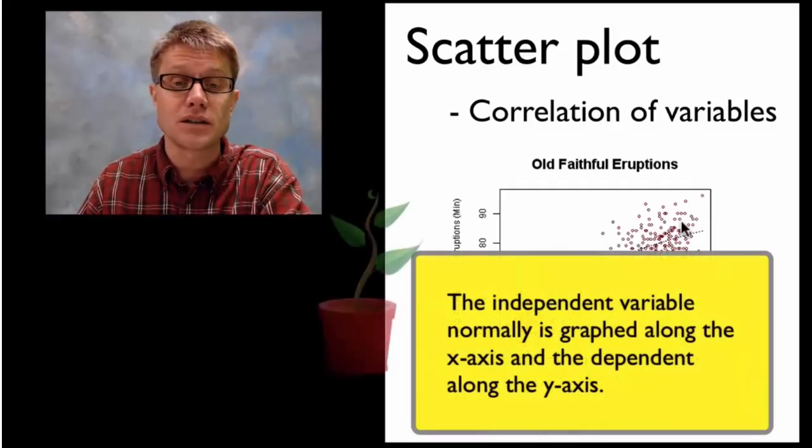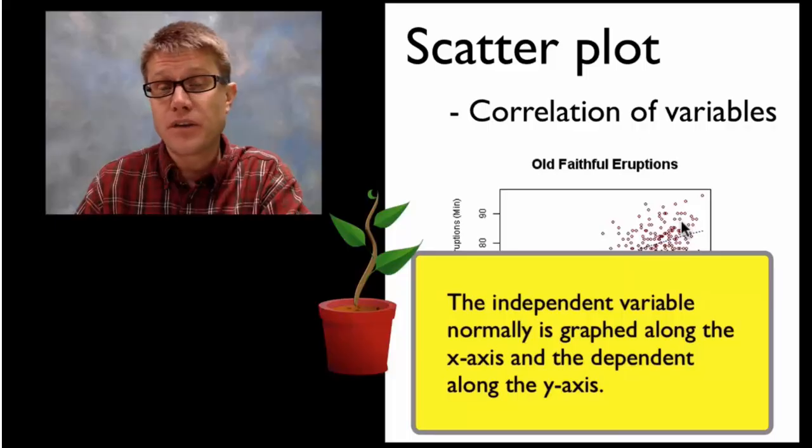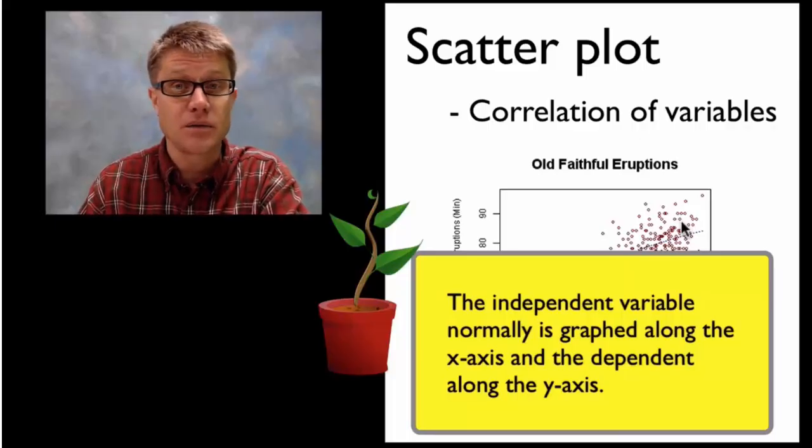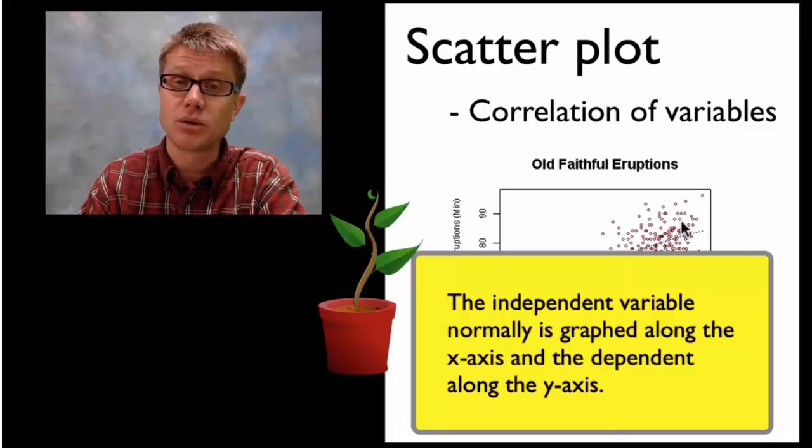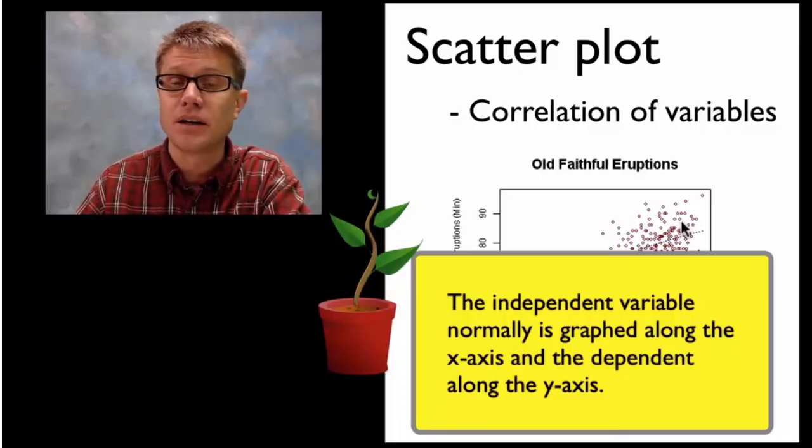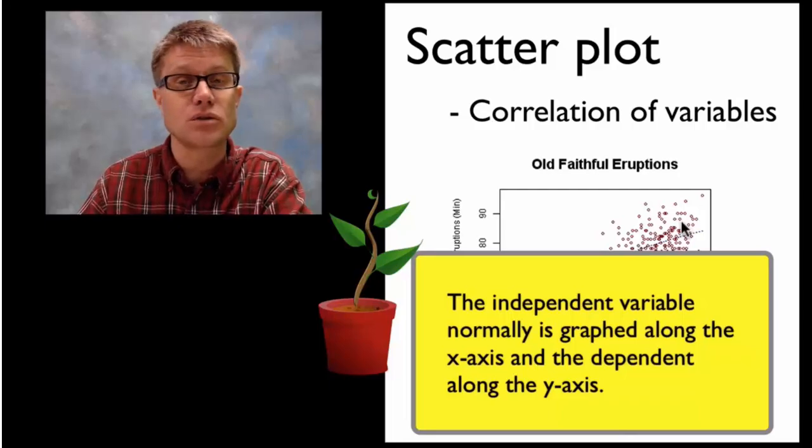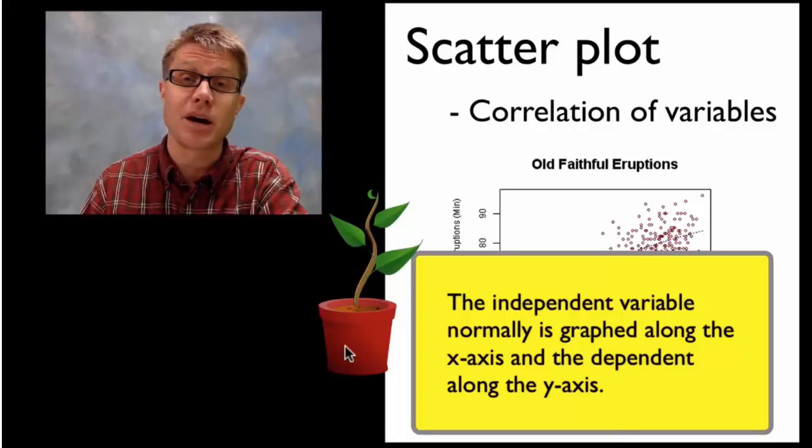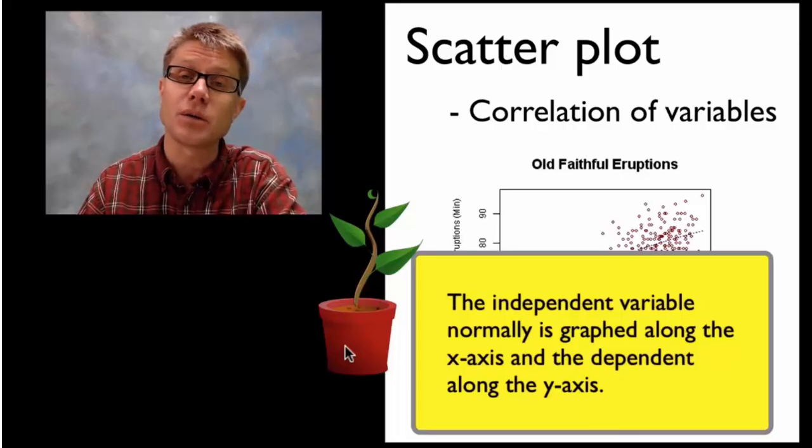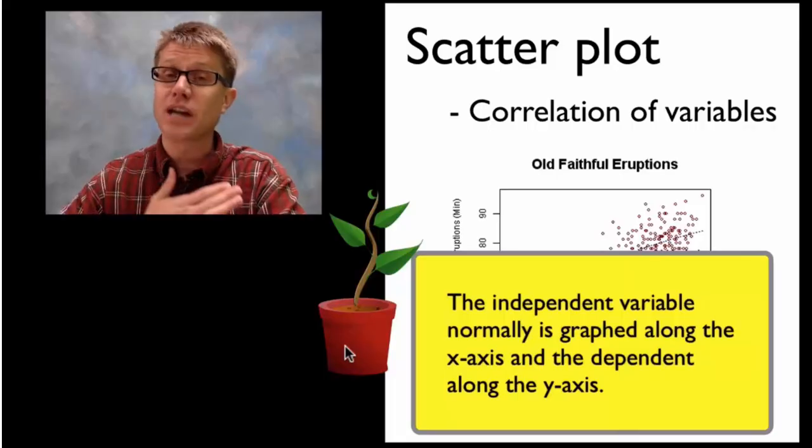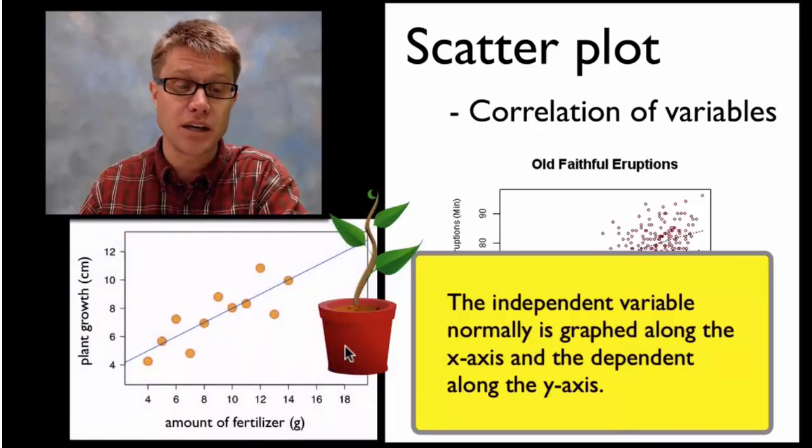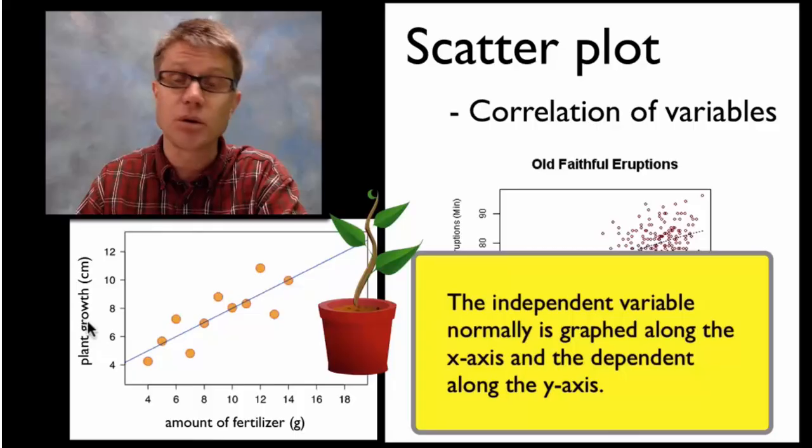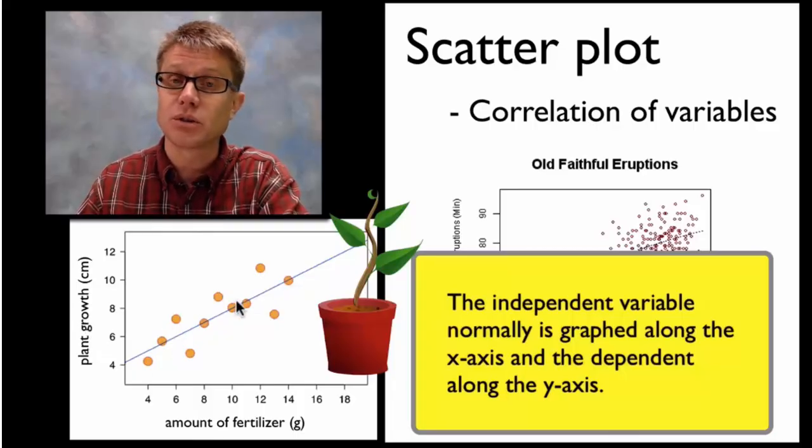Scatter plots are really important in a science classroom. For ever varying one variable, we call that the independent variable, and then measuring how that affects another variable, we call that the dependent variable, then a scatter plot is going to be the graph of choice. When you're doing that make sure that you put the independent variable on the x axis. So let's say that this plant right here, I'm doing an experiment where I vary the amount of fertilizer and then I measure how much that plant grows over time. Well since I'm varying the independent variable, I'm going to put that on the x, the amount of fertilizer, and then we put plant growth on the y. And we look at a correlation between those two. So scatter plots are incredibly important in a science room.